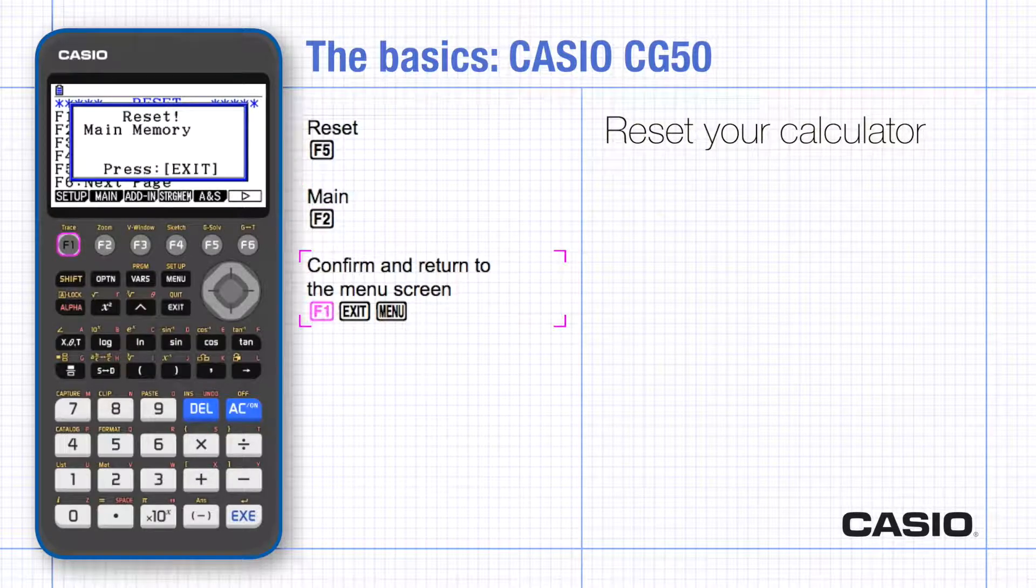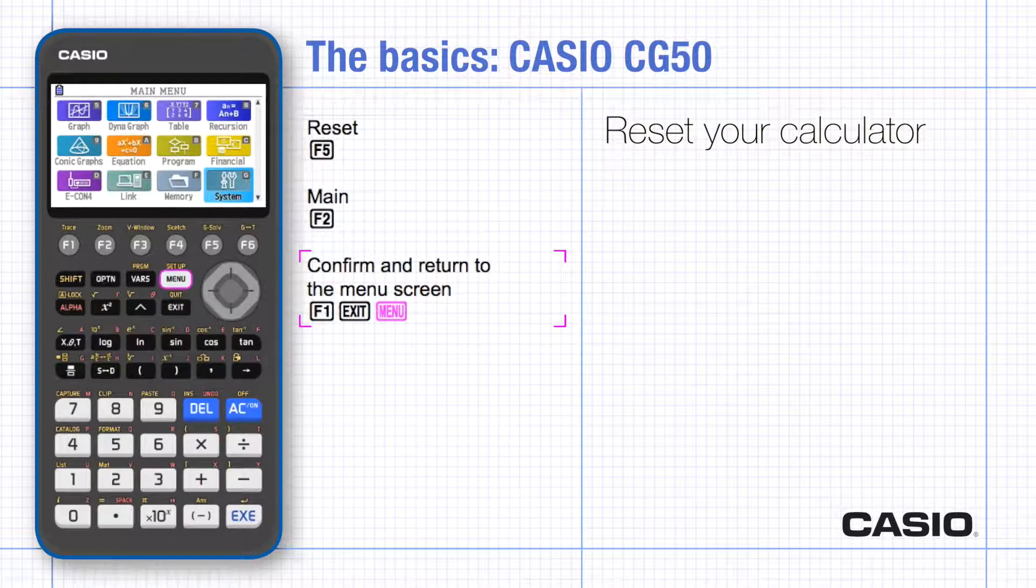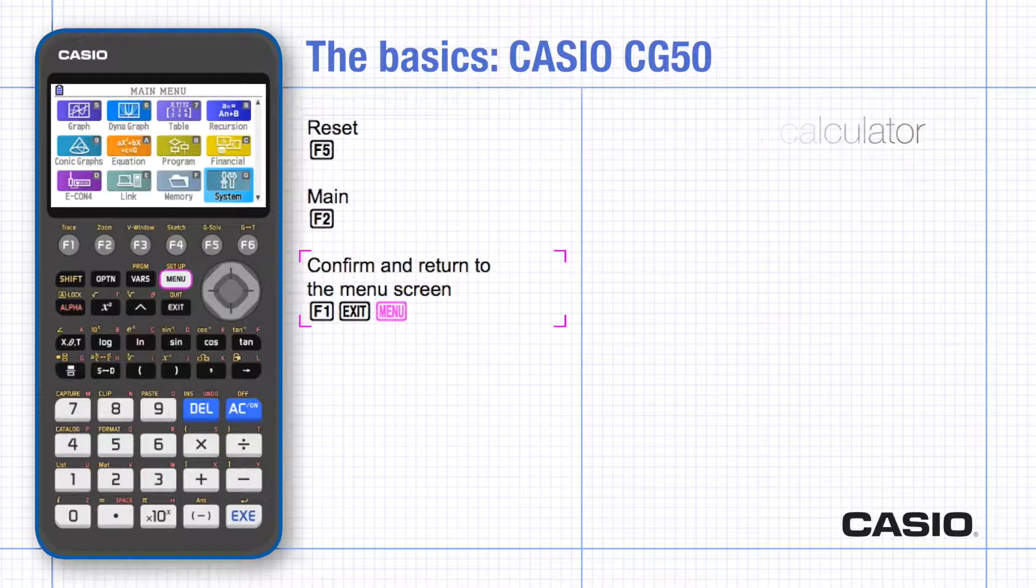So press F1 to confirm and you'll be asked to exit. You can always use exit to go back through the menu choices. Return to the menu screen and we will look at some of the keys and the menus in run mode.